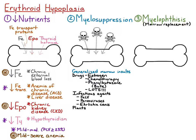Now I'll go on to agents that cause selective erythroid suppression — just decreased production of red cells without affecting neutrophils or platelets. Feline leukemia virus, or FeLV, can cause just suppressed production of red cells.